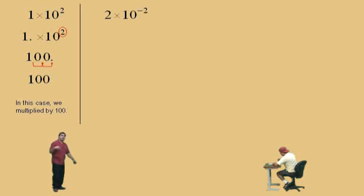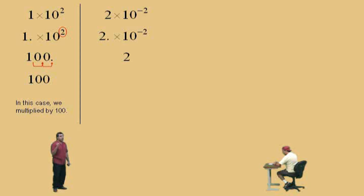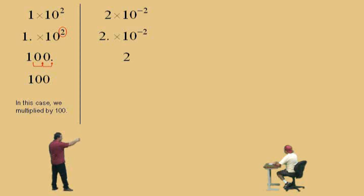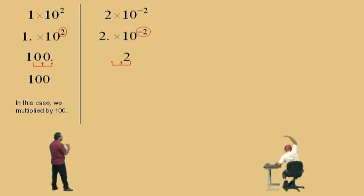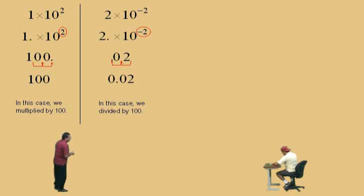For two times ten to the negative two, the decimal is just to the right of the two. Ten to the negative two means one over ten squared, which is one over a hundred, so you're actually dividing by a hundred. With a negative two exponent, you move the decimal to the left two times. Put your placeholder zero, put your decimal, and the answer is 0.02. In this case, we divide by a hundred.